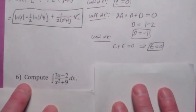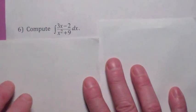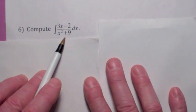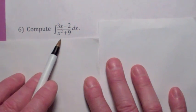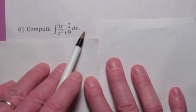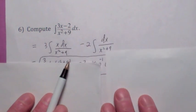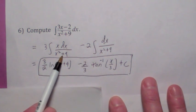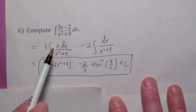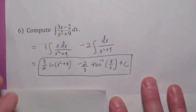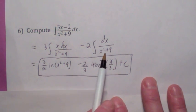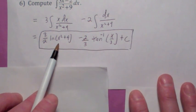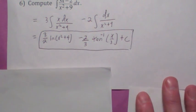One more — a sneaky one. If you try to integrate this expression, you might try partial fractions, but that doesn't really help here. Instead, break it into two integrals: for one, use a u substitution; for the other, use the inverse tangent — or you could do a trig substitution with x equals 3 tan theta. The final answer is 3 halves ln x squared plus 9 minus 2 thirds inverse tangent of x over 3 plus c.